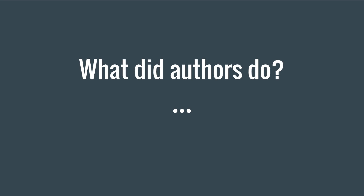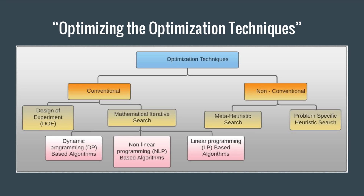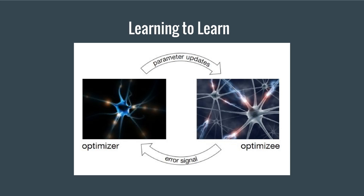Let's see what the authors came up with. Following the transition from hand-designed features to learned features in machine learning, this approach enables us to train optimizers specialized to particular classes of functions without direct domain knowledge of the problem. The authors propose the following idea: the optimizer on the left side receives information from the optimizee on the right side, which in turn sends back updates and improves further.